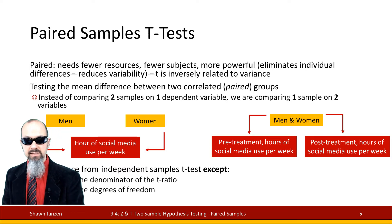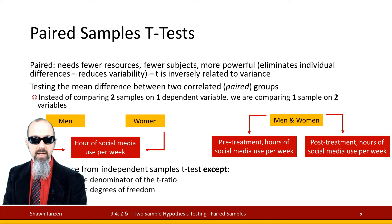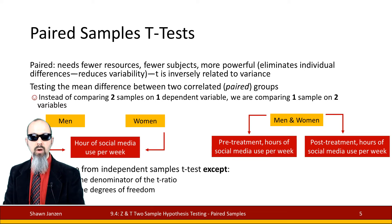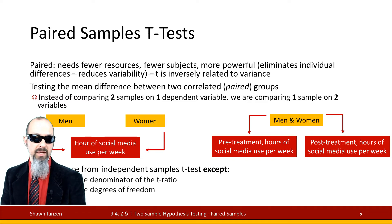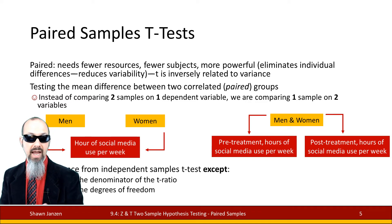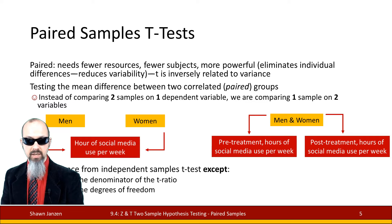Instead of comparing two samples on one independent variable — such as looking at men and women and how much time they spend on social media each week — we could look at one sample compared on two variables. So instead of looking at men and women separately, we could look at them together and see how their social media use per week was before some sort of treatment and how it looks after the treatment. That's where the two-sample, two-variable framework still applies.